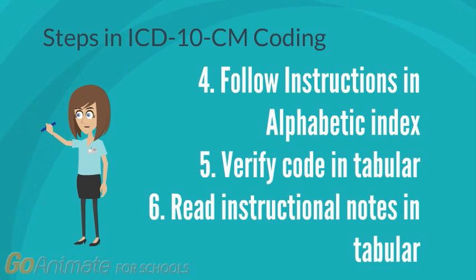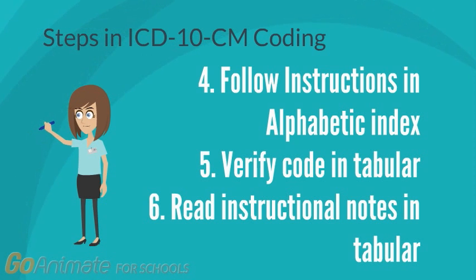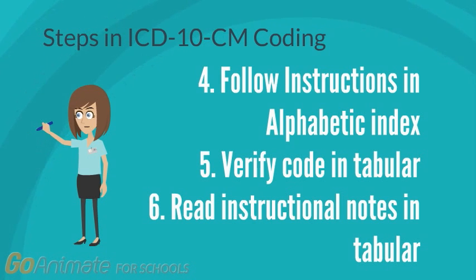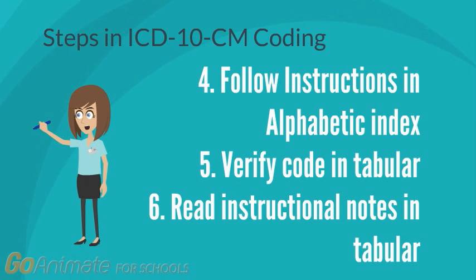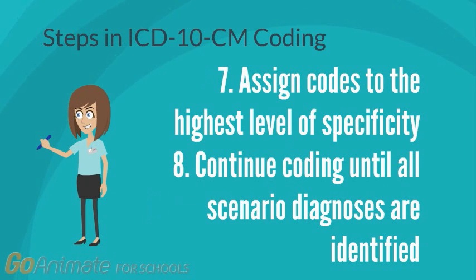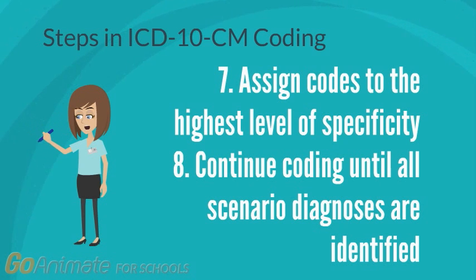Step four is to read instructions in the alphabetical index. Step five is to verify the code in the tabular. Step six is to look for instructional notes in the tabular and read if anything else is needed. Step seven is to assign our code to the highest level of specificity, which means we've included all the code characters necessary.